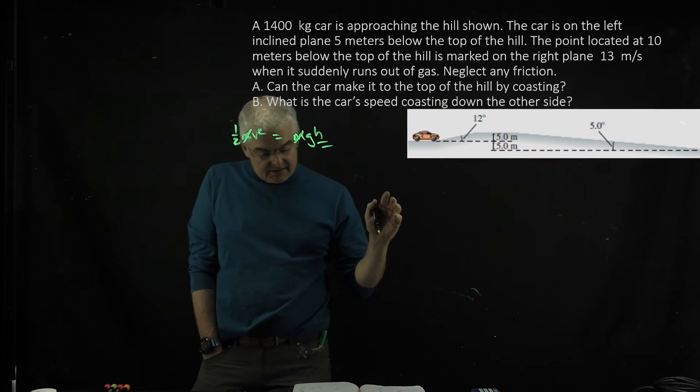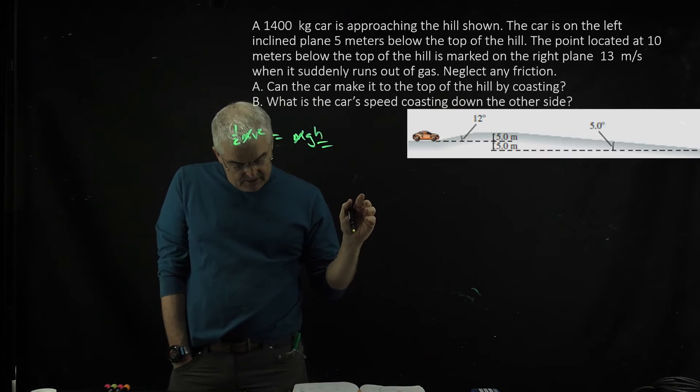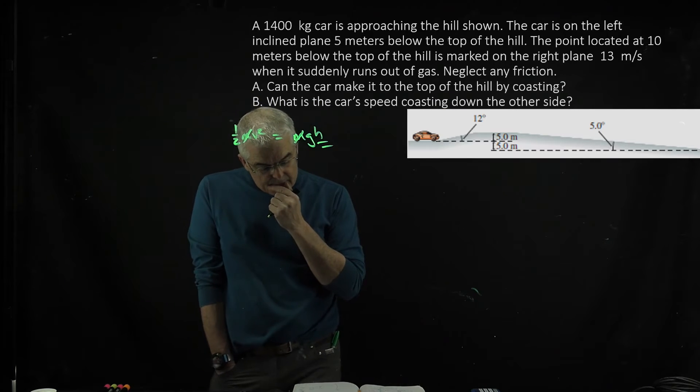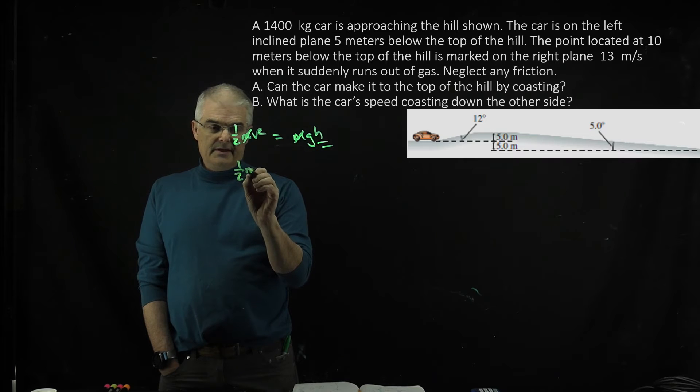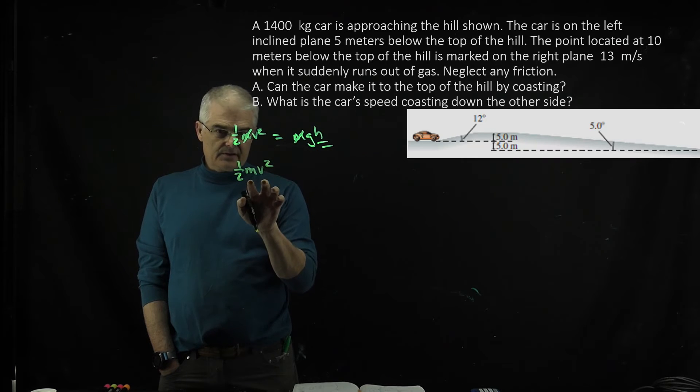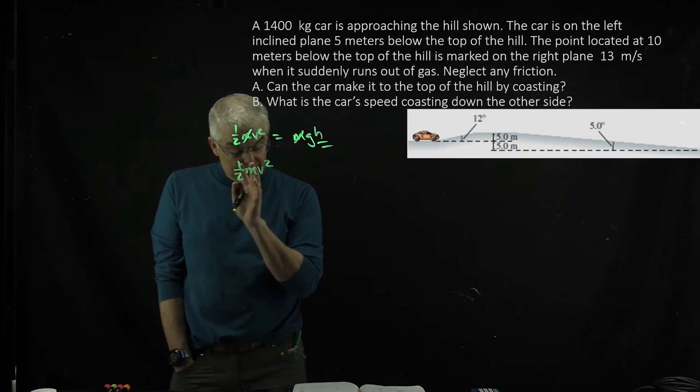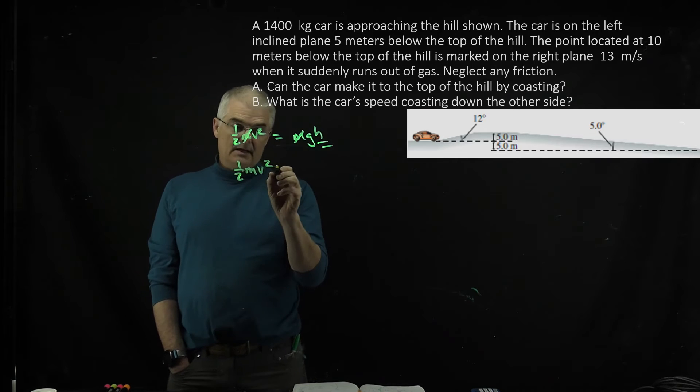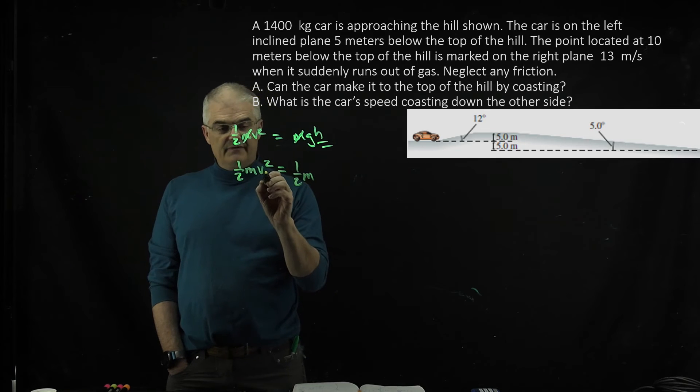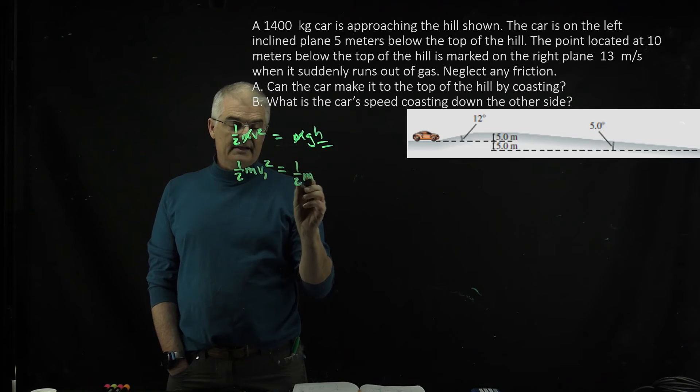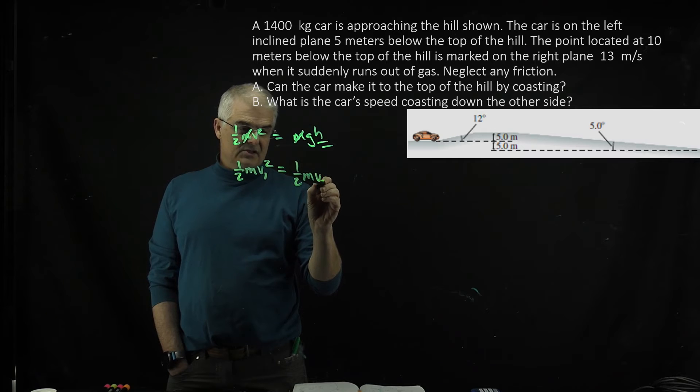So what is his velocity at the top of the hill? I said one-half mv squared - that's the energy he had at the beginning - equals one-half m v2 squared. This is v1 initial, and this is v2 squared. I'm trying to find v2 squared.